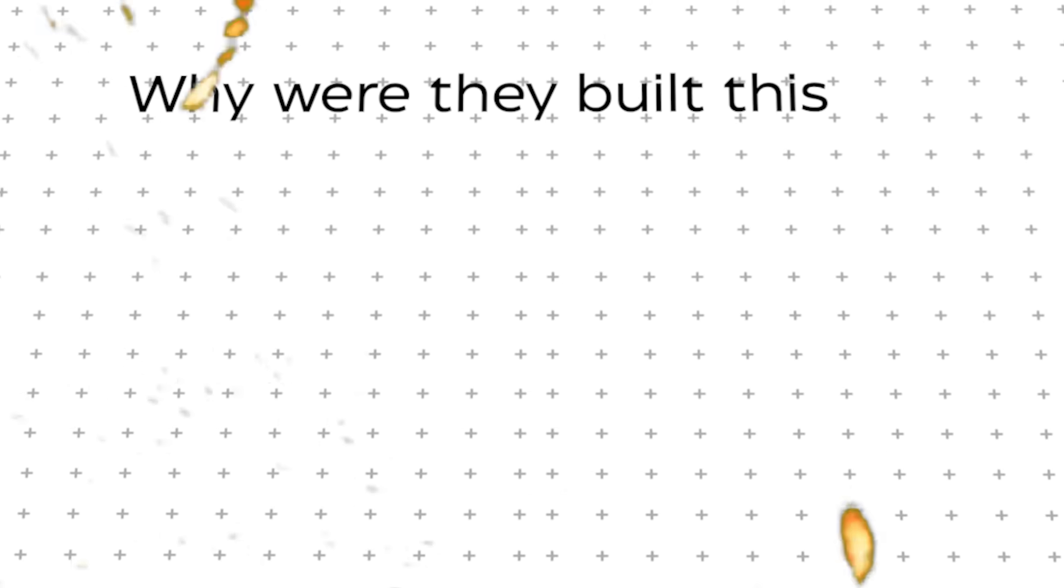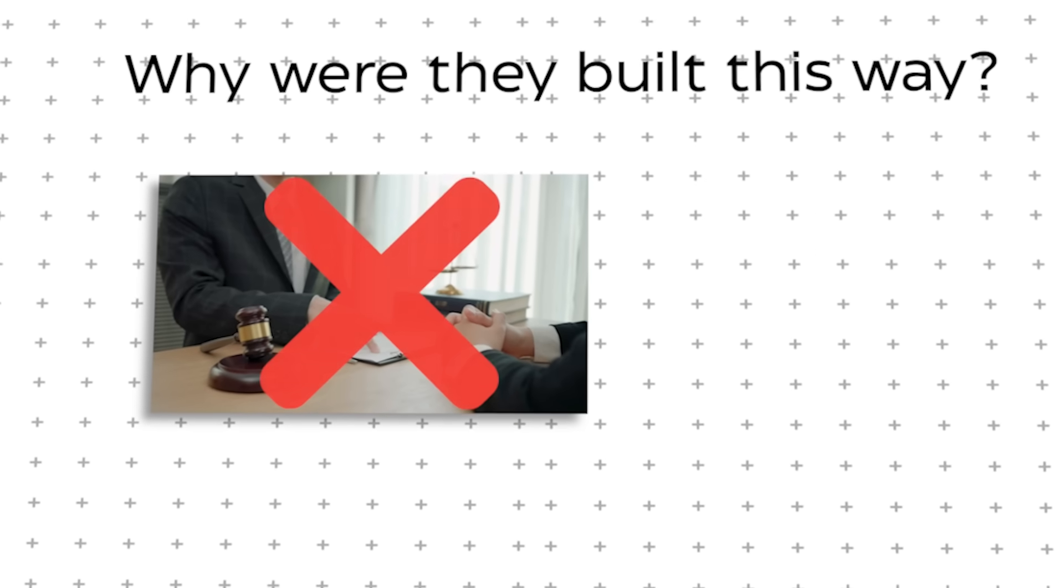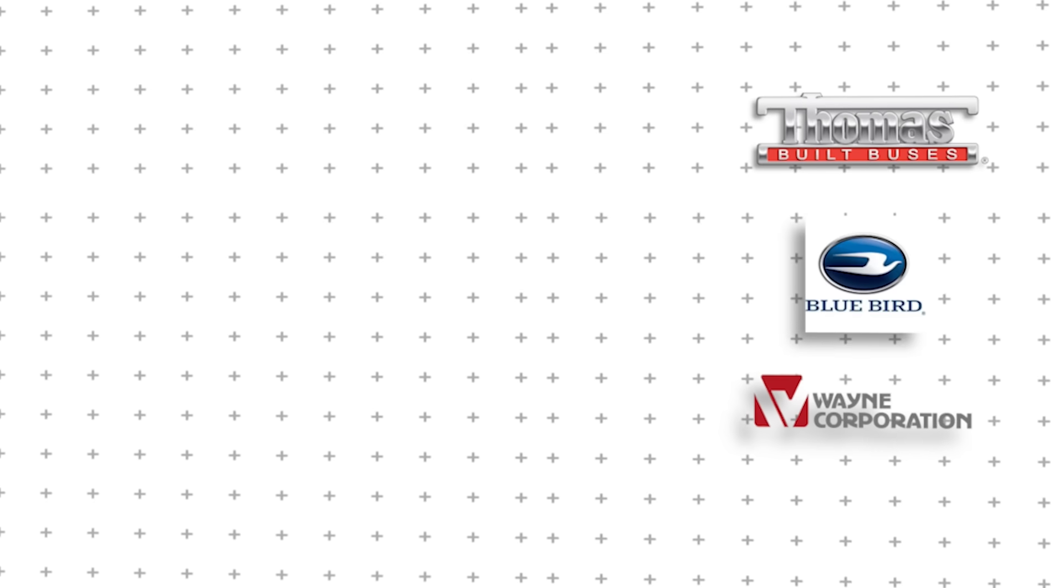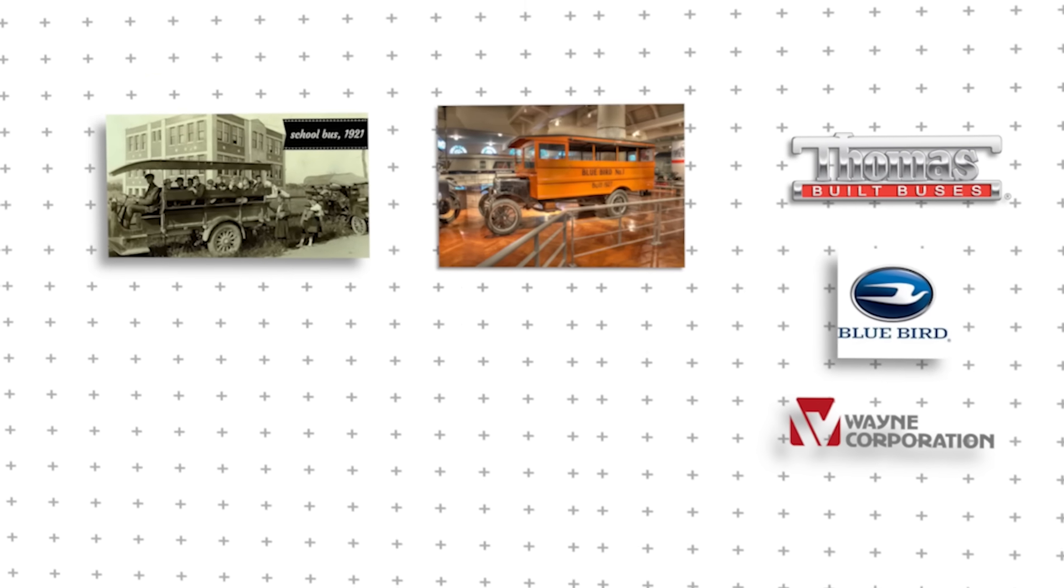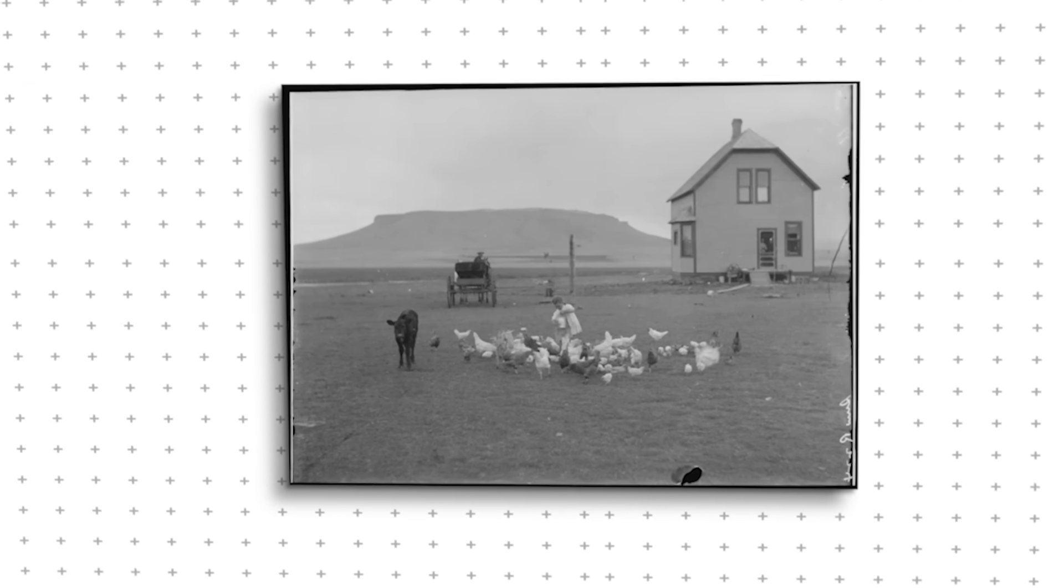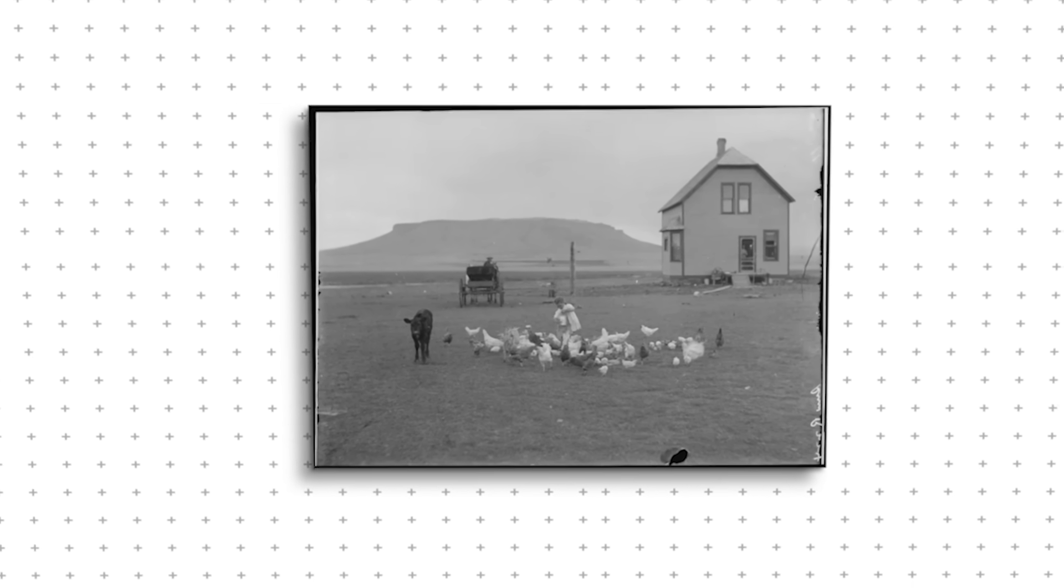Why were they built this way? Because there were no regulations. Every manufacturer built buses differently, with wildly inconsistent materials, braking systems, and safety features. A child's safety depended entirely on where they lived and what kind of bus their district could afford.